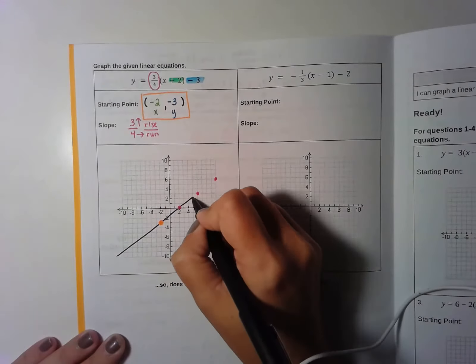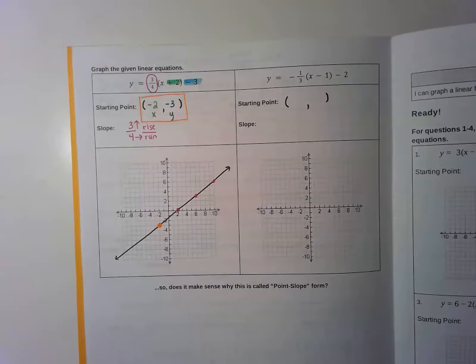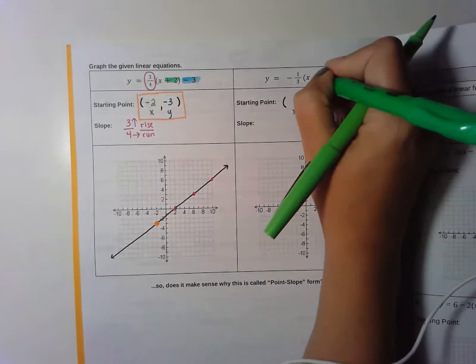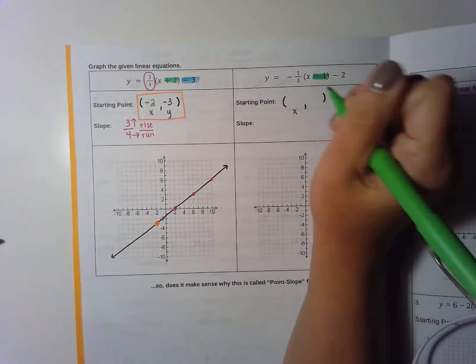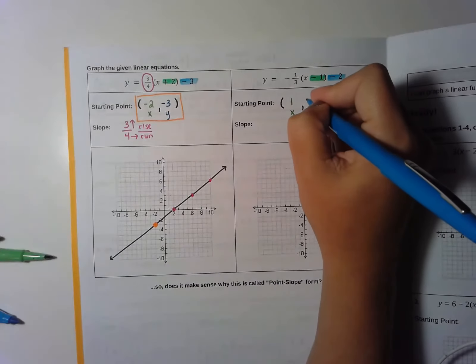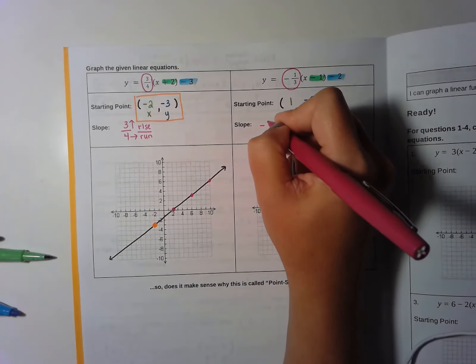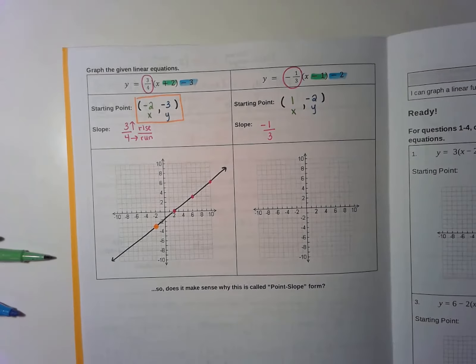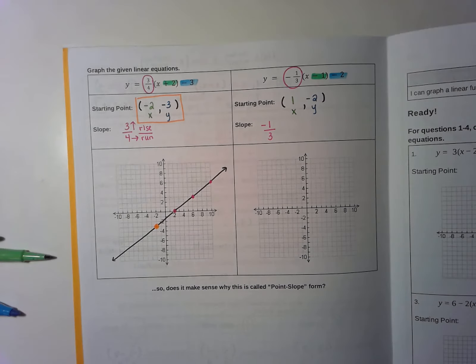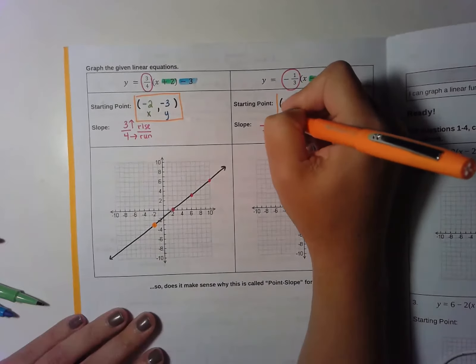Then draw a nice straight line through your points. Let's graph one more. I find my starting point and slope to have something to graph. The x coordinate of the starting point is inside the parentheses — since it says negative 1, the starting x is actually positive 1. The y coordinate is negative 2, and we keep that the same because y is always the same as what you see. The slope is negative 1 third. When writing negative 1 third, put the negative on the top only — never on both top and bottom.